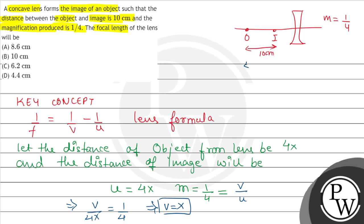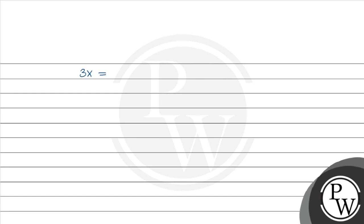If we take our object at distance 4x from the lens, the image distance will be x, so the distance between object and image will be 4x minus x = 3x. And we know that the distance between object and image is 10 cm, so 3x = 10 cm, giving us x = 10/3 cm.